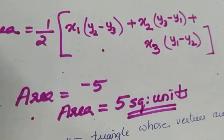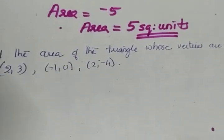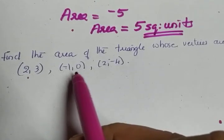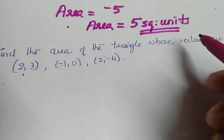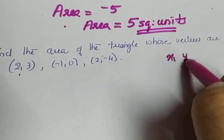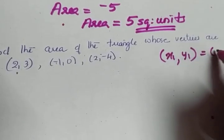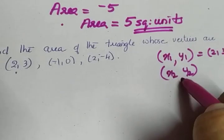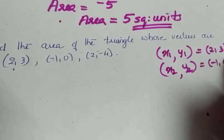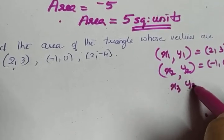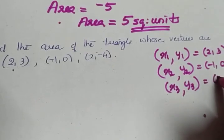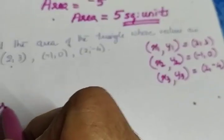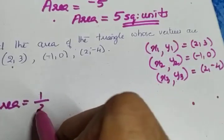We will now solve the first question: find the area of the triangle whose vertices are (2, 3), (−1, 0), and (2, −4). We take x1 y1 as (2, 3), x2 y2 as (−1, 0), and x3 y3 as (2, −4). So area is equal to half into x1(y2 − y3) plus x2(y3 − y1) plus x3(y1 − y2).